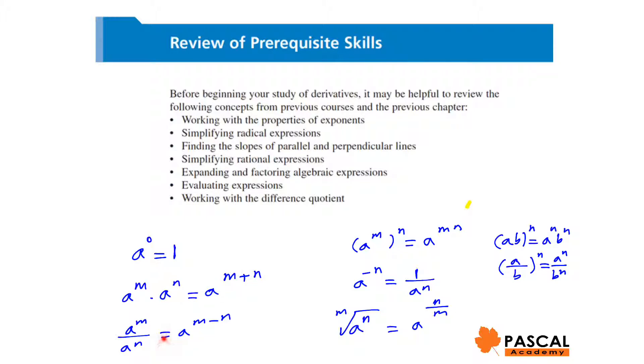a to the power of m divided by a to the power of n is a to the power of m minus n. Power of power, a to the power of n to the power of m is a to the power of m times n.